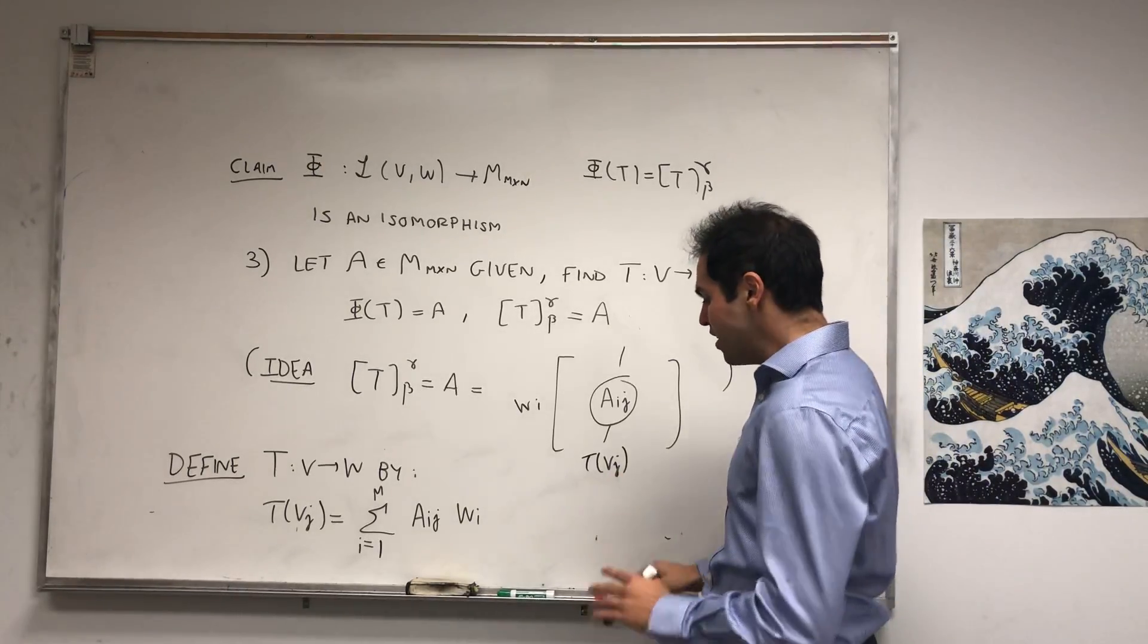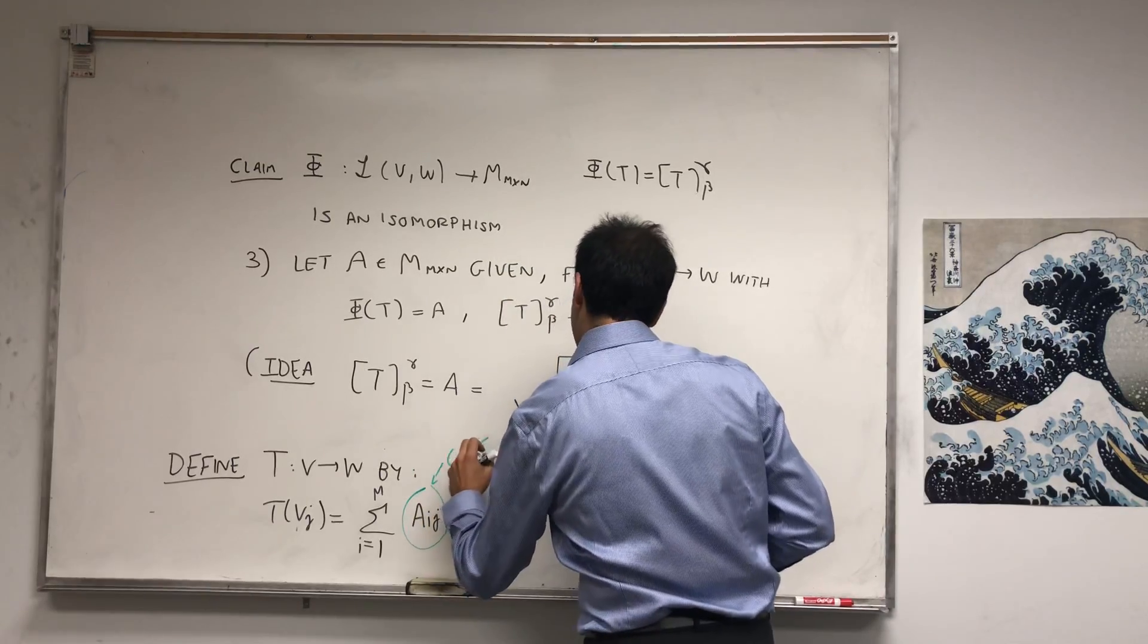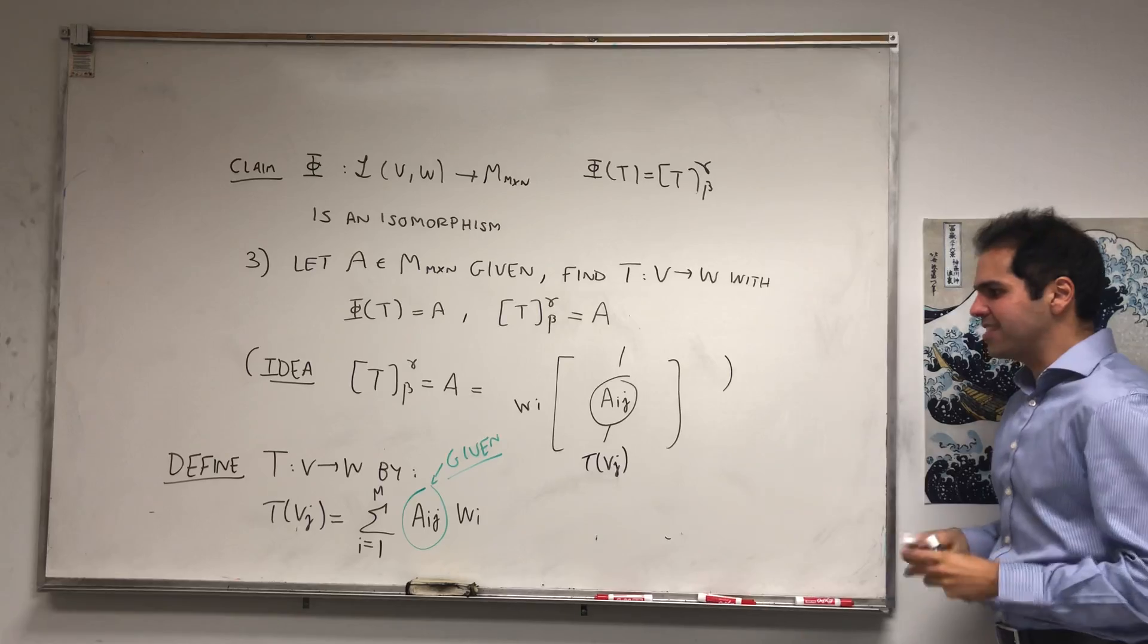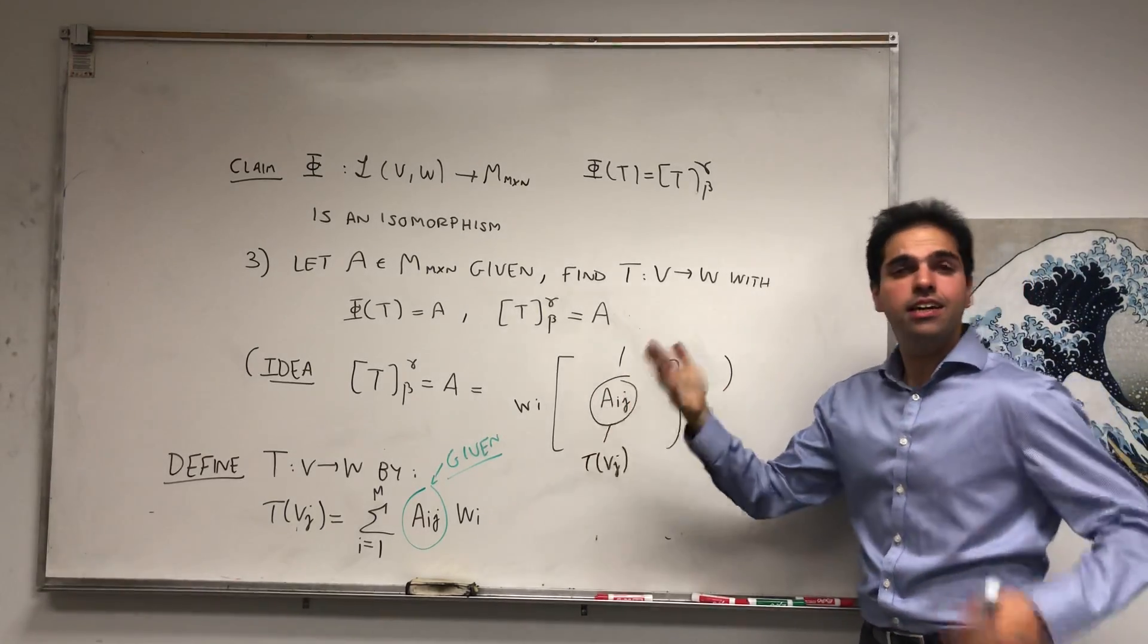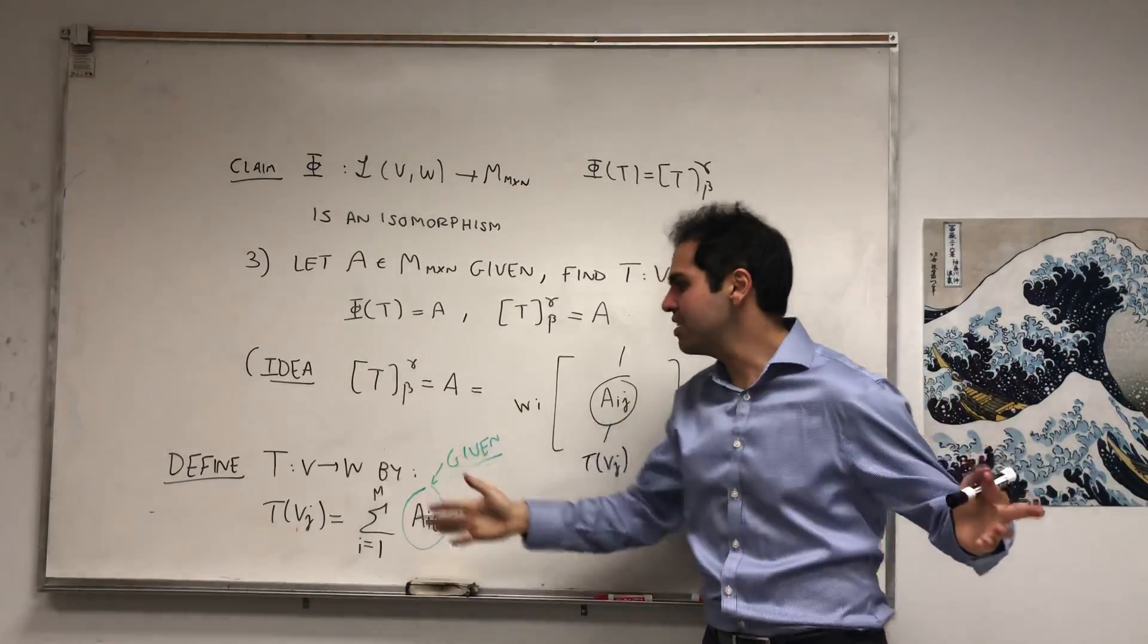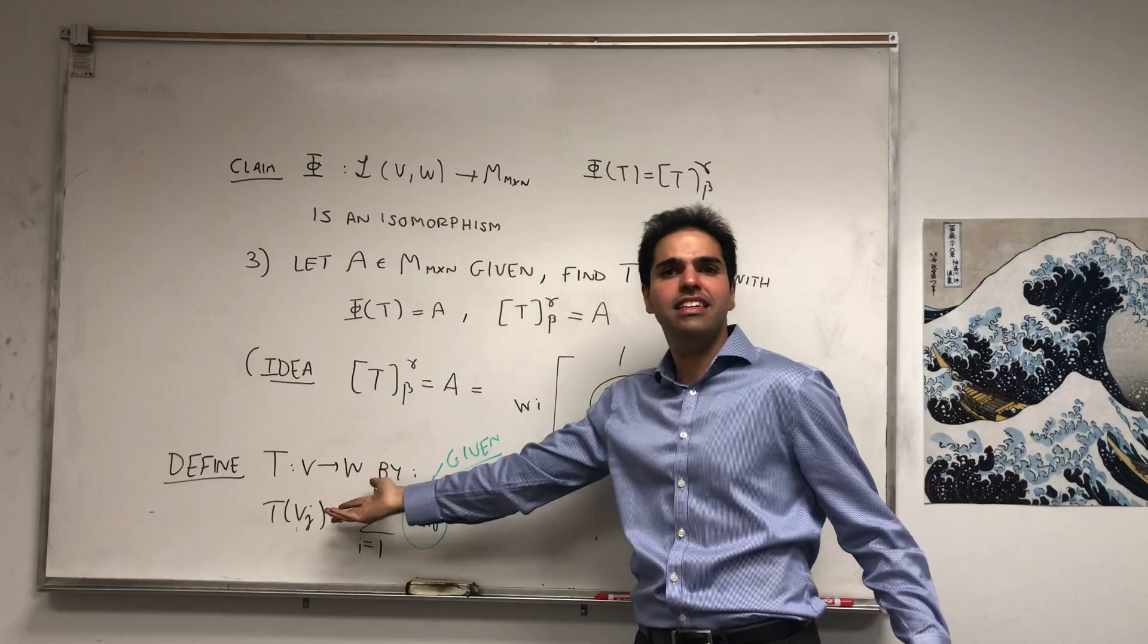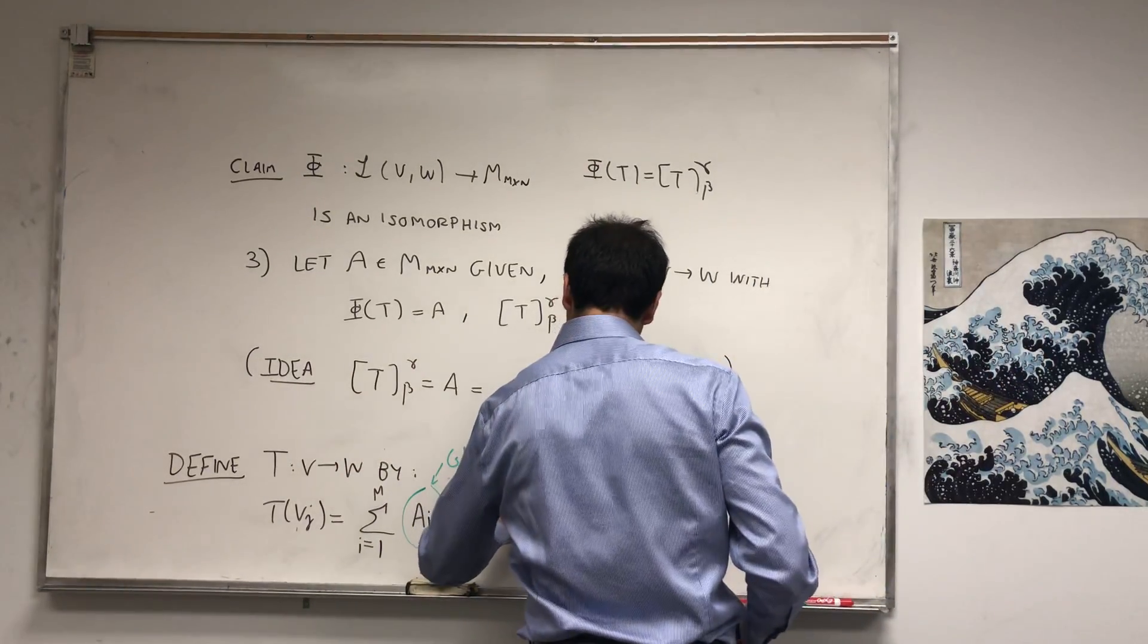And the point is those are given constants. So this formula at least makes sense. Why does that define all of T? You see, technically we need T for any vector in V, but it turns out because v_j's are a basis, then we are actually done. This is again for all j.